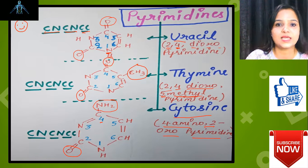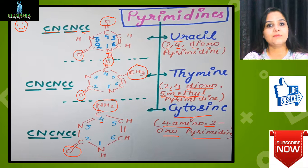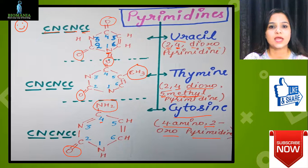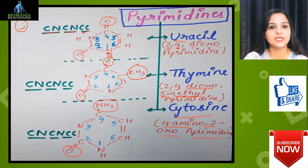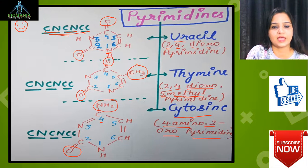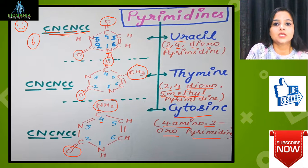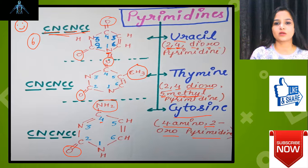To summarize: nitrogenous bases have two types — purines, which have a small name but a big structure, and pyrimidines, which have a big name but a small structure. Purines include adenine (6-aminopurine) and guanine (2-amino-6-oxopurine). For pyrimidines, only six letters are used in the ring (purines use nine). Uracil and thymine are both 2,4-dioxo; thymine just has an extra methyl group. Cytosine has an amino group at the fourth position and oxo at the second position.